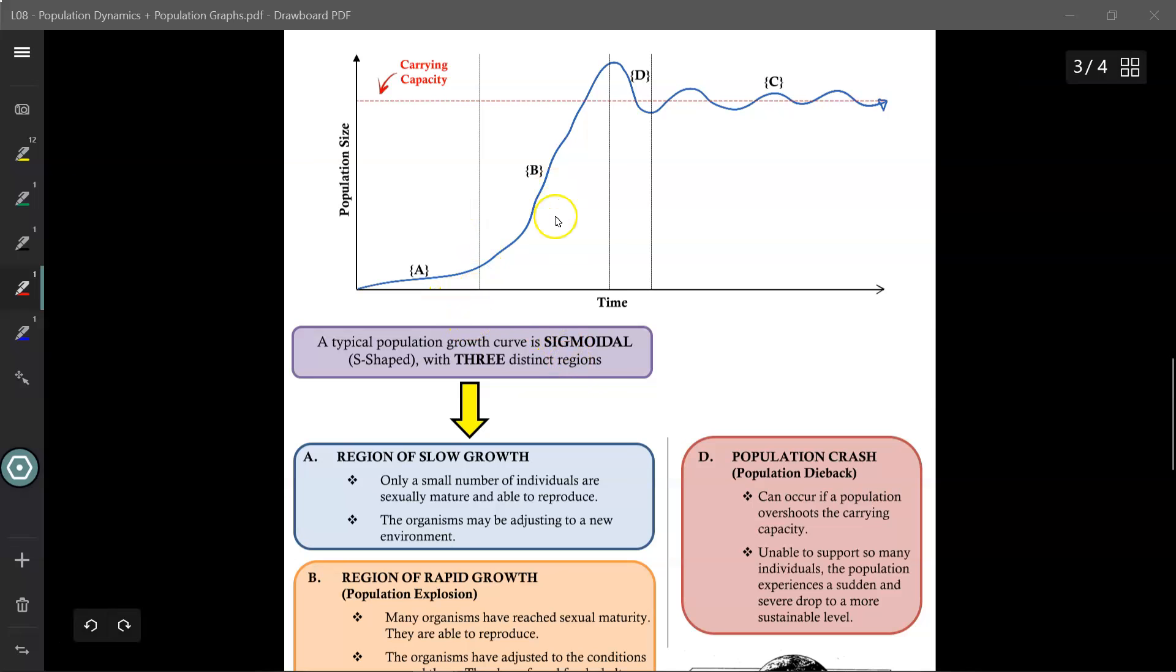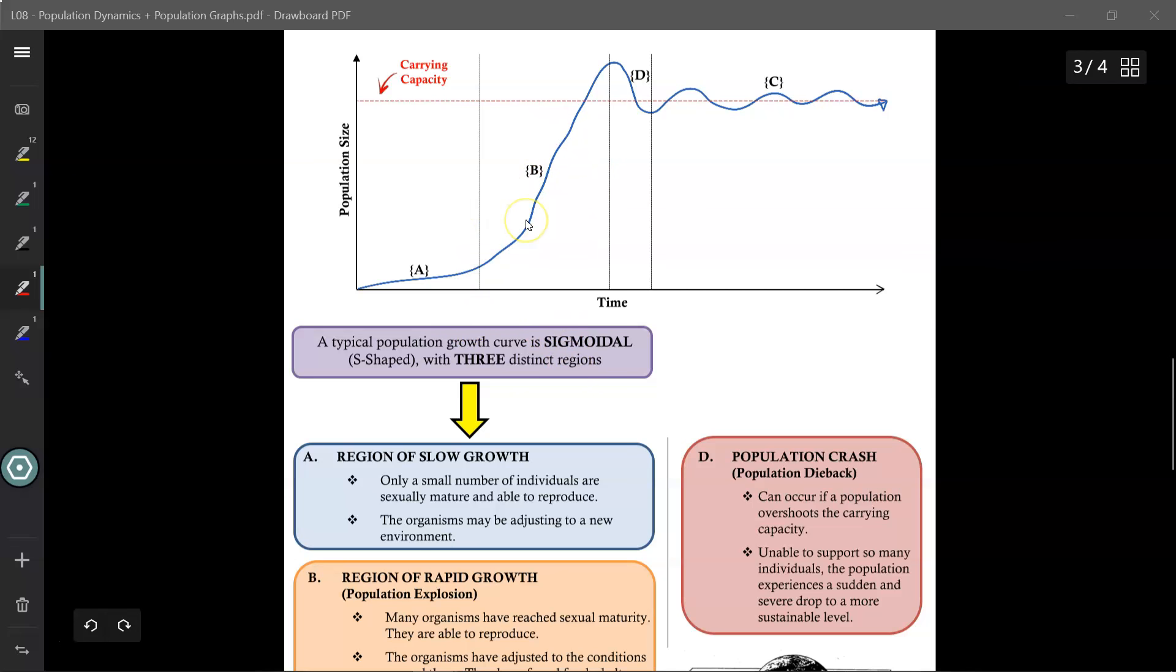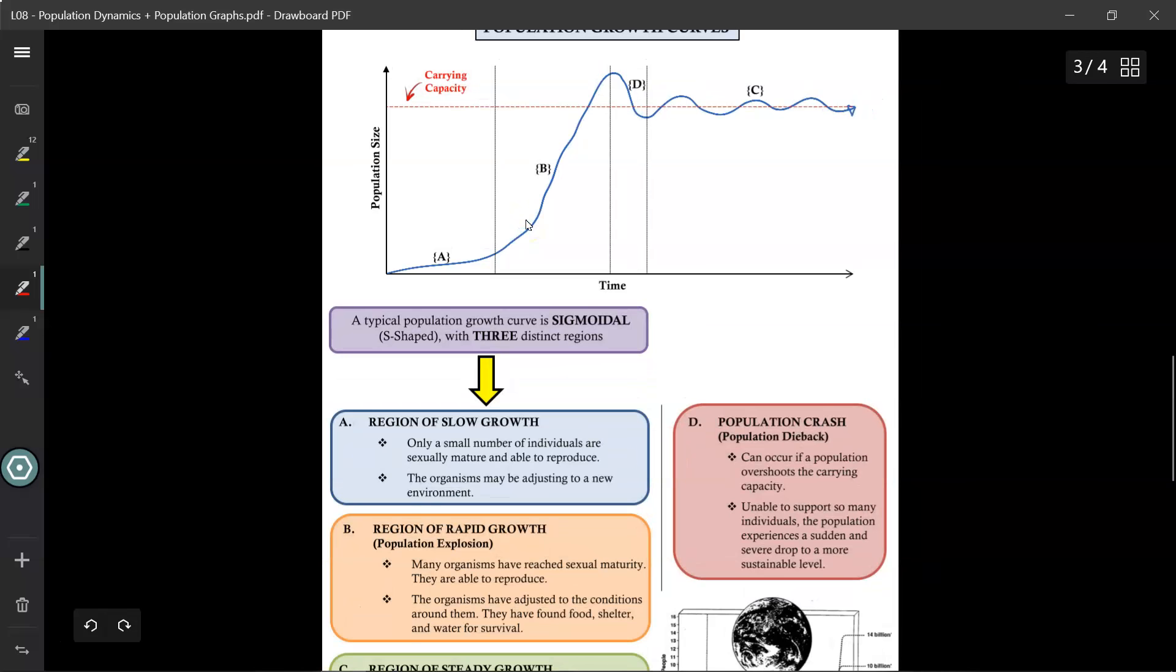Now the second region is called the region of rapid growth, also known as the population explosion region. Now that the organisms have adapted and adjusted to the environmental conditions, they found their food, they found their shelter, they know how to survive the predators and hide from them, they can concentrate on reproducing at this point. Furthermore, any animals that were born in this period have now reached sexual maturity, and they too can have their own babies to add to the population.